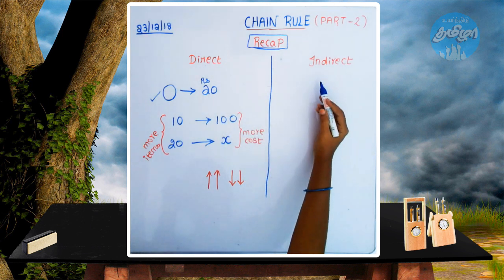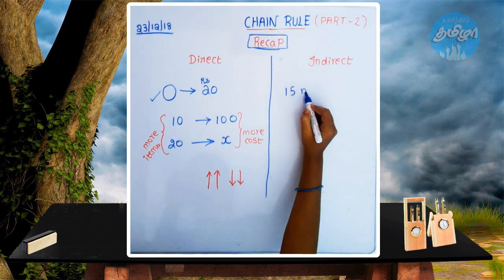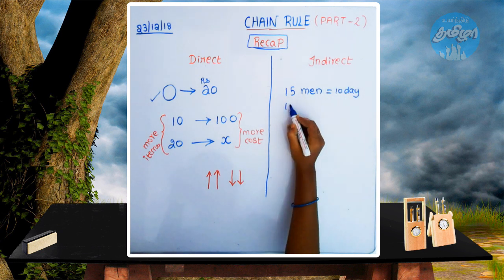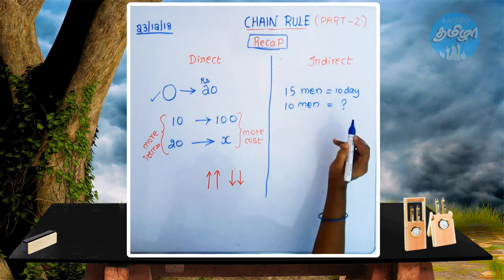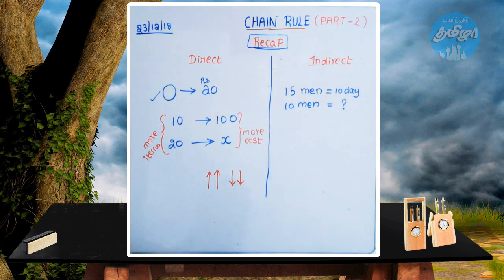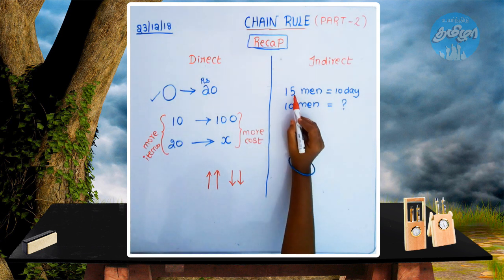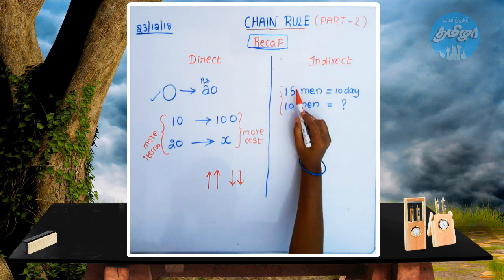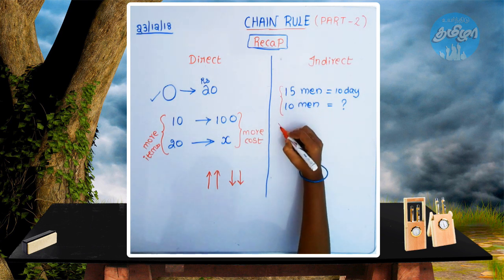Now for example, 10 men can do a job in 15 days. If 10 men are doing the work in these days, we can ask a question. If you ask questions, how do we check? You see the men count is higher — it is 15. The time is less men.